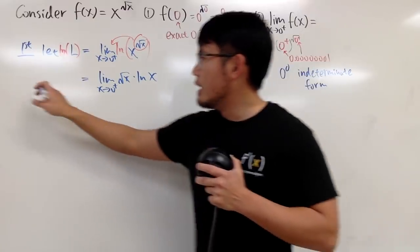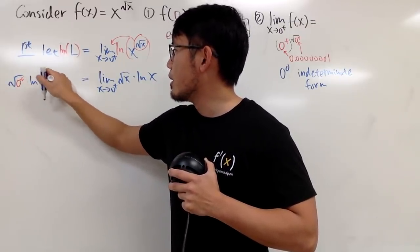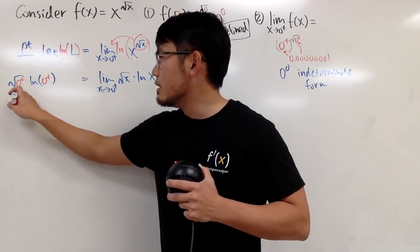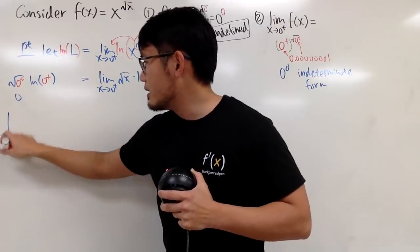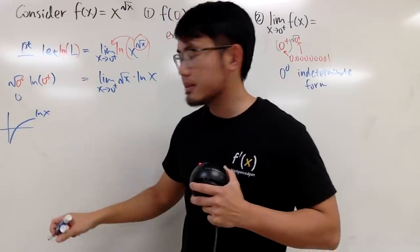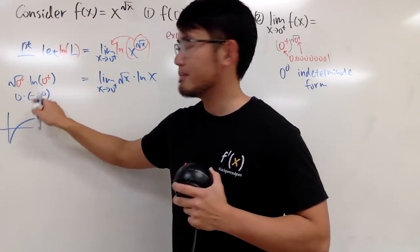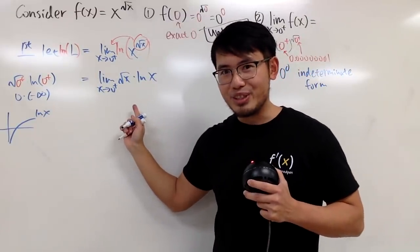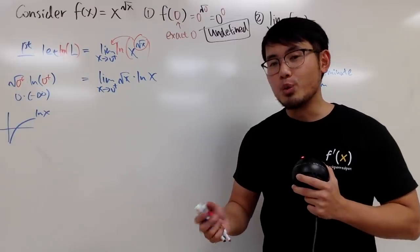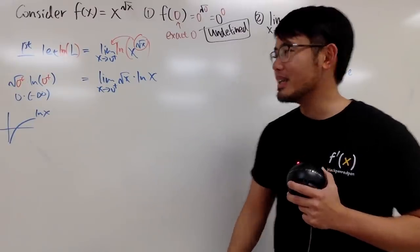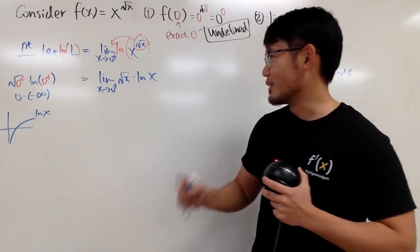If we plug 0 plus into here: square root of 0 plus is 0, and ln of 0 plus — looking at the graph of natural log — as x approaches 0 from the right, the y value goes to negative infinity. So we have 0 times negative infinity. This is another indeterminate form situation. To use L'Hôpital's rule, we need either 0 over 0 or infinity over infinity. We have 0 times infinity, so if we can turn the 0 into an infinity in the denominator, we'll be in good shape.